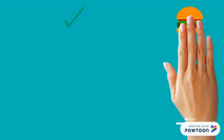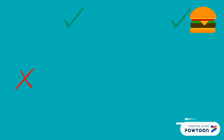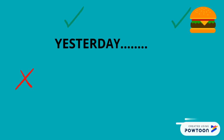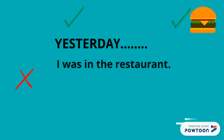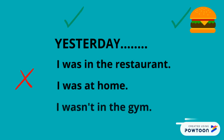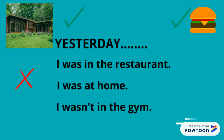Let's start with the first example. Here we have three different pictures — some will have a check mark and others will have an X. They say: Yesterday, I was in the restaurant. I was at home. But I wasn't in the gym.